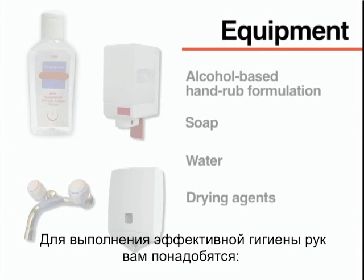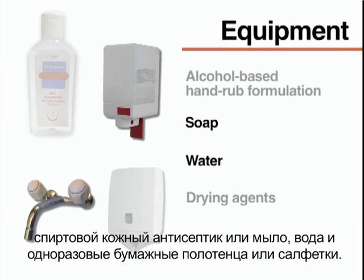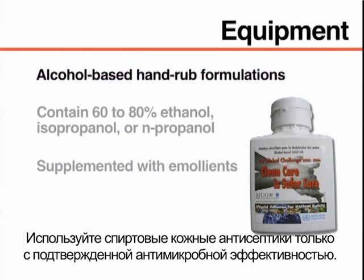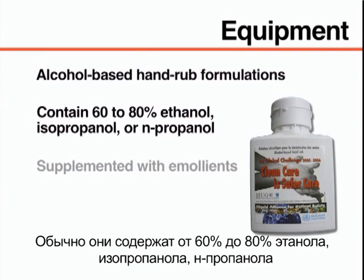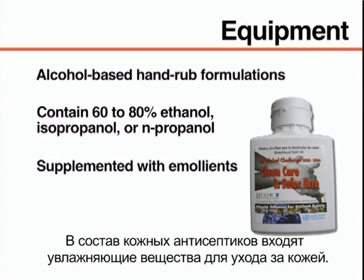To perform adequate hand hygiene, you will need an alcohol-based hand rub formulation or soap, water, and drying agents such as disposable paper or cloth towels. Use alcohol-based hand rubs with proven antimicrobial efficacy. These usually contain 60–80% ethanol, isopropanol, or n-propanol, or a combination of these products. These hand rubs are supplemented with emollients to protect the skin.